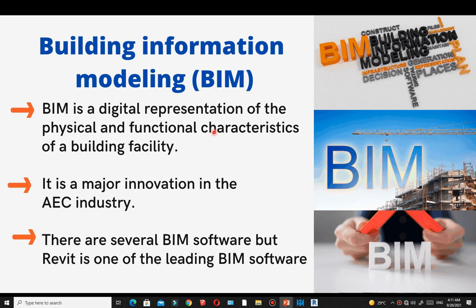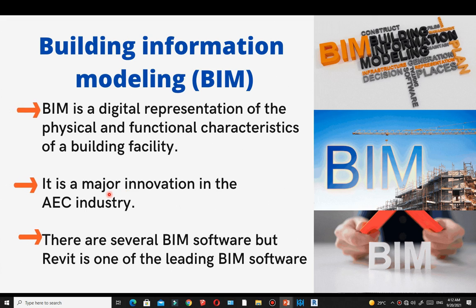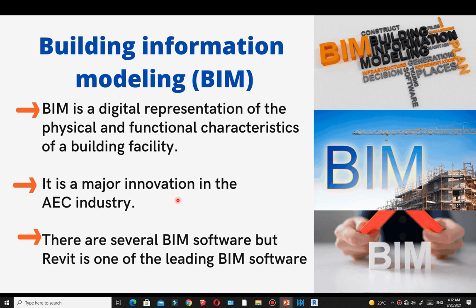BIM is simply a digital representation of the physical and functional characteristics of a building facility. Two aspects are present: the physical and the functional. It's important that before you implement your project on the ground, you model and embed all its physical and functional characteristics, so you are sure that what you are designing is going to work in reality. That's the main reason BIM was innovated.